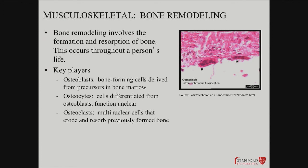Is it the muscle tugging on the bone via the tendon that causes that? Is there something inside the bone that's responding to that stress and strain and then leading to production of more bone? Biochemically and cellularly, how is that happening? Who is sensing that stress?